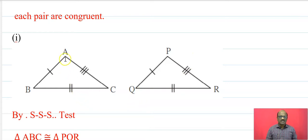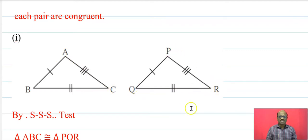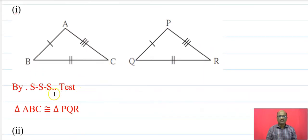In triangle ABC: segment AB is congruent to segment PQ, segment BC is congruent to segment QR, and segment AC is congruent to segment PR. Therefore these two triangles are congruent by the SSS test, and it is written as triangle ABC is congruent to triangle PQR.